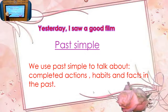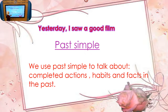We use Past Simple to talk about completed actions or habits and facts in the past. For example: 'I went to school when I was young.' Now I'm not going to school because I'm not a student anymore.